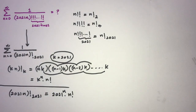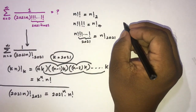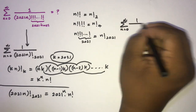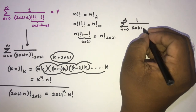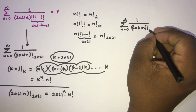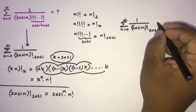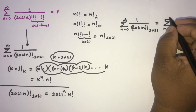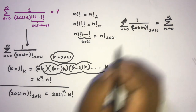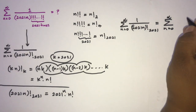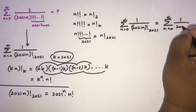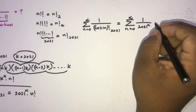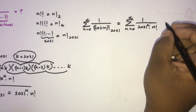Now we can rewrite our question: the sum from zero to infinity of one over (n factorial) to the 2021. This equals the infinite sum from zero to infinity of one over 2021 to the n power times n factorial.